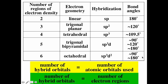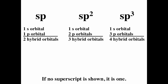Six regions would be octahedral with bond angles of 90° and 180°, giving SP3D2 hybridization. The exponents in these symbols represent the number of each orbital type used, and if you add up the exponents, you get the number of regions of electron density: 1+3+2=6, 1+3+1=5, 1+3=4, 1+2=3, 1+1=2. SP means one S and one P forming two hybrid orbitals. SP2 means one S and two Ps forming three hybrid orbitals. SP3 means one S and three Ps forming four hybrid orbitals. If no subscript is shown, the subscript is one.